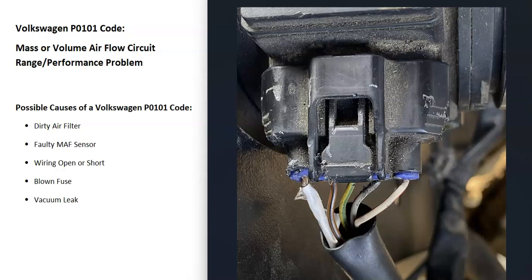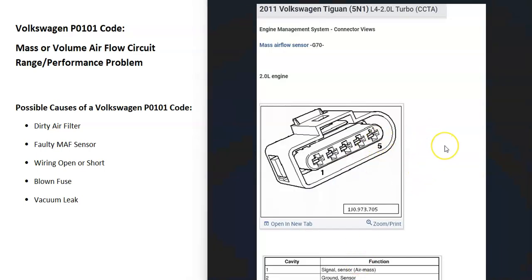Another thing that could cause this is the wiring. If there's an open, short, or bad connection, it can cause the same symptoms as a bad mass sensor. It's always a good idea to get a wiring diagram for your specific Volkswagen. For example, on a 2011 VW, pin number one is the signal wire sending a signal back to the onboard computer, number two is the ground wire, and number three is the voltage. Check the wiring for any open or short circuits.